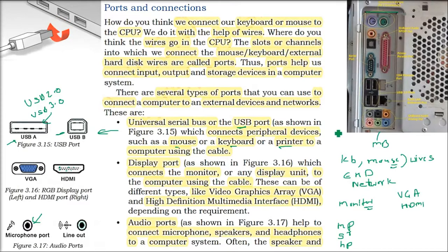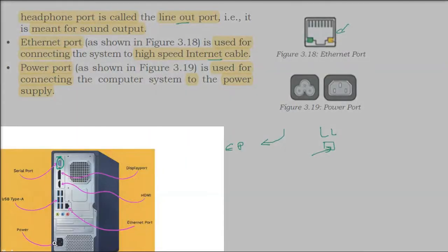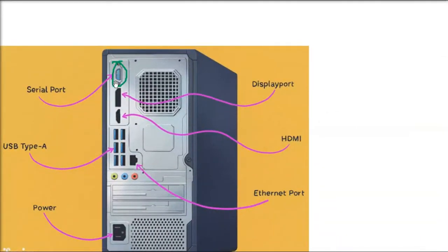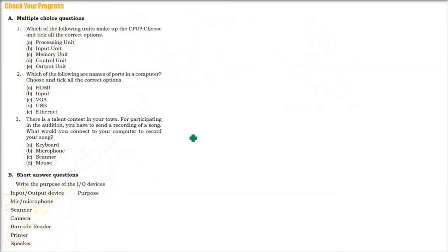The Ethernet port and power port are also important to note. The serial port is for video output, and there are display ports such as HDMI. There is also USB and a power port, along with an Ethernet port. There will be an SMPS for power supply. That covers everything we have discussed.